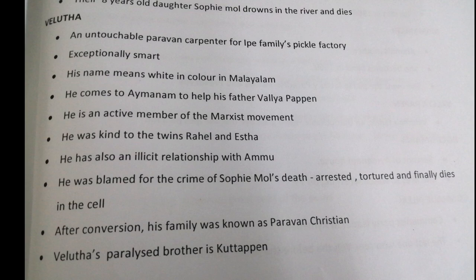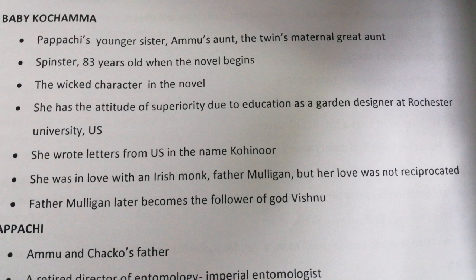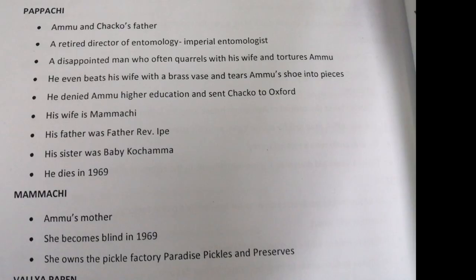Velutha's paralyzed brother is Kuttapen. Next character: Baby Kochamma — Papachi's younger sister, Ammu's aunt, the twins' maternal great-aunt. A spinster, 83 years old when the novel begins. She has an attitude of superiority due to her education as a garden designer at Rochester University, US. She wrote letters from the US in the name of Kohinoor. She was in love with an Irish monk, Father Mulligan, but her love was not reciprocated. Father Mulligan later becomes a follower of the god Vishnu.